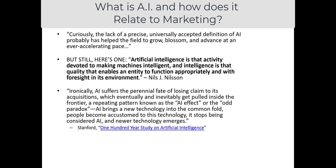People reflecting on a hundred-year study of artificial intelligence get to this understanding of why this lack of a concise definition is inevitable when we use the word AI. Ironically, artificial intelligence suffers the perennial fate of losing claim to its acquisitions — a repeating pattern known as the 'AI effect' or the 'odd paradox.' AI brings a new technology into the common fold, people become accustomed to it, it stops being considered AI, and newer technology emerges.